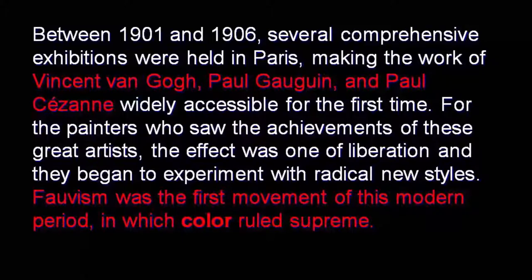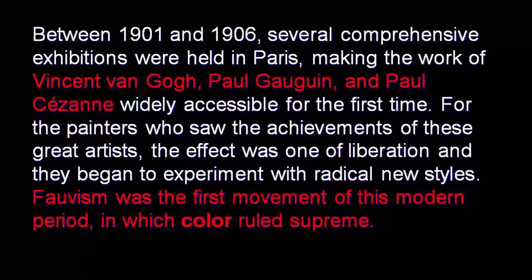Between 1901 and 1906, several comprehensive exhibitions were held in Paris, making the work of Vincent van Gogh, Paul Gauguin, and Paul Cézanne widely accessible for the first time. For painters to see the achievements of these great artists, the effect was one of liberation, and they began to experiment with radical new styles including a new role for colour — which is what Fauvism is all about.